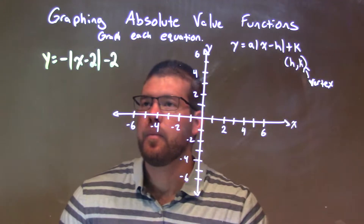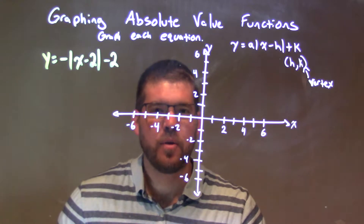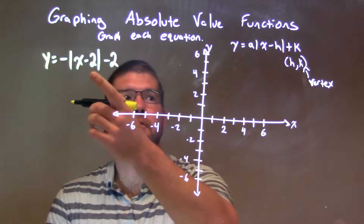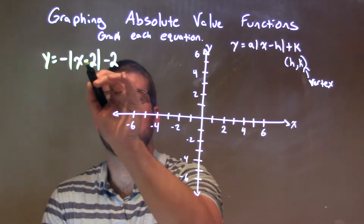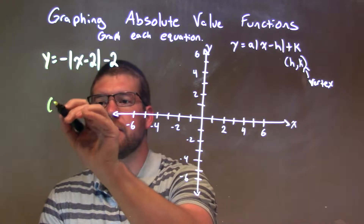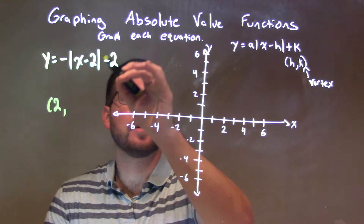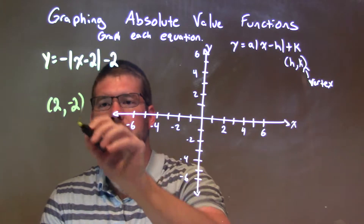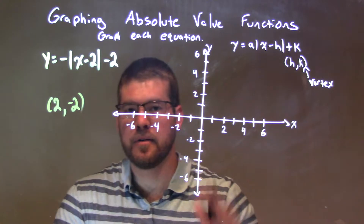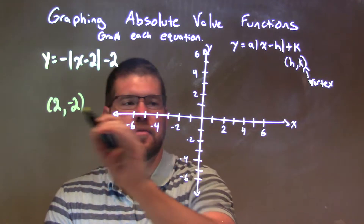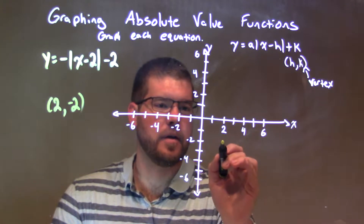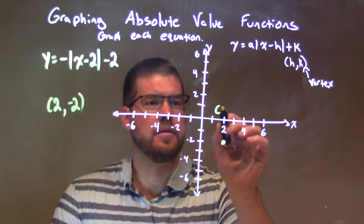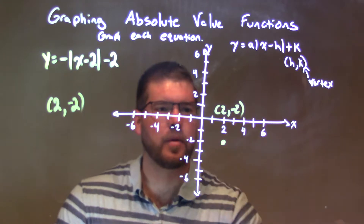When I get this, the first thing I want to do is find the vertex. We're in standard form, so our h-value is a positive 2, because it's a minus 2 inside. And then k is a negative 2, okay, and this gives us our vertex. So the vertex is at (2, -2) — over 2, down 2, right there.